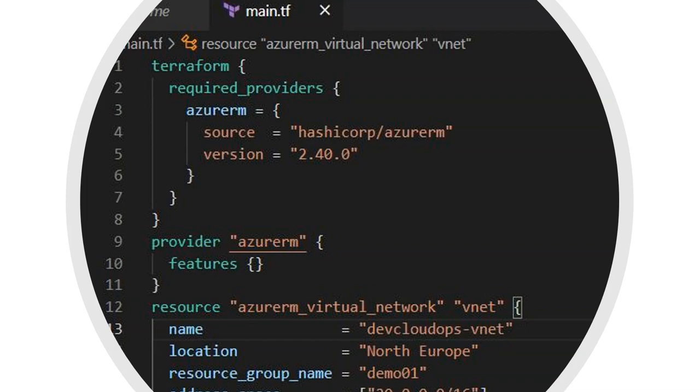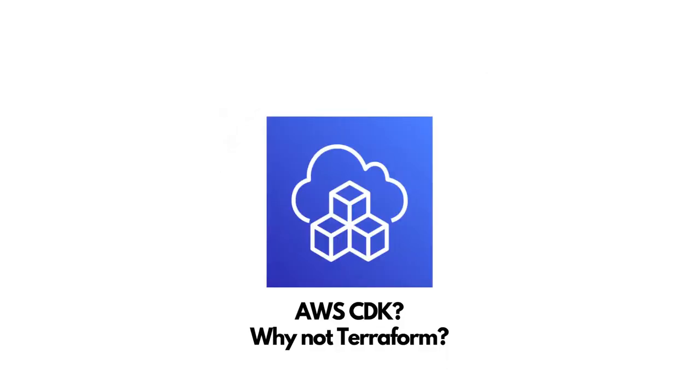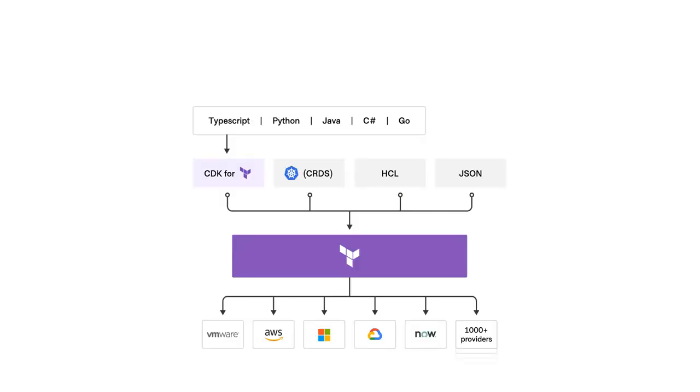Suppose you want to write infrastructure code for different cloud providers like AWS and Azure. Terraform is notably cloud-agnostic, but what if you know Terraform concepts yet don't know how to write infrastructure using HCL, and instead are familiar with a programming language like TypeScript, Java, Python, or .NET? The solution is CDK for Terraform — with CDKTF you can write infrastructure in your familiar language, and it will convert it into Terraform files.